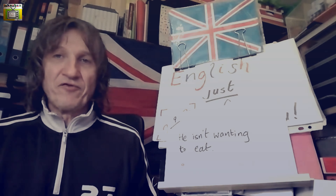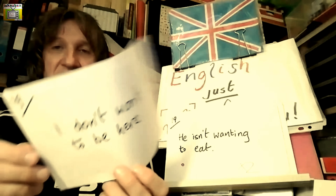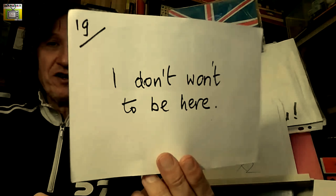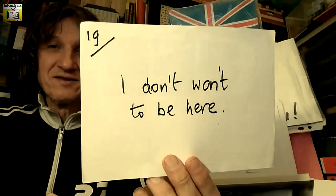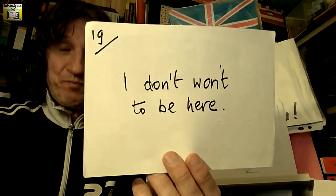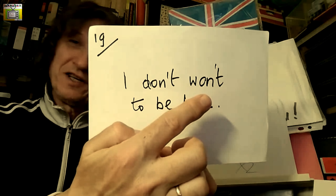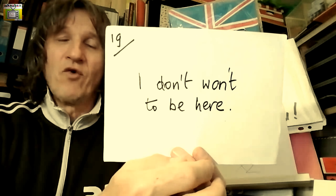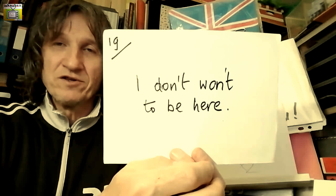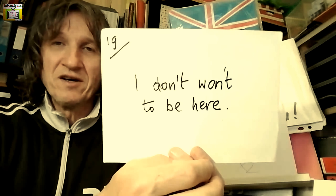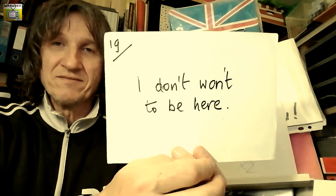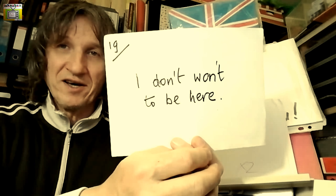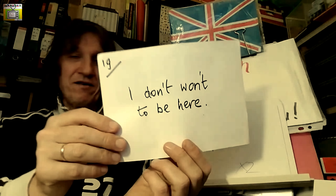Sentence number three: 'I won't to be here.' The word 'won't' means 'will not'. I think the intention here is to have 'want' instead of 'won't', so the answer should be 'I don't want to be here' — but 'I do want to be here.' That's sentence number three.